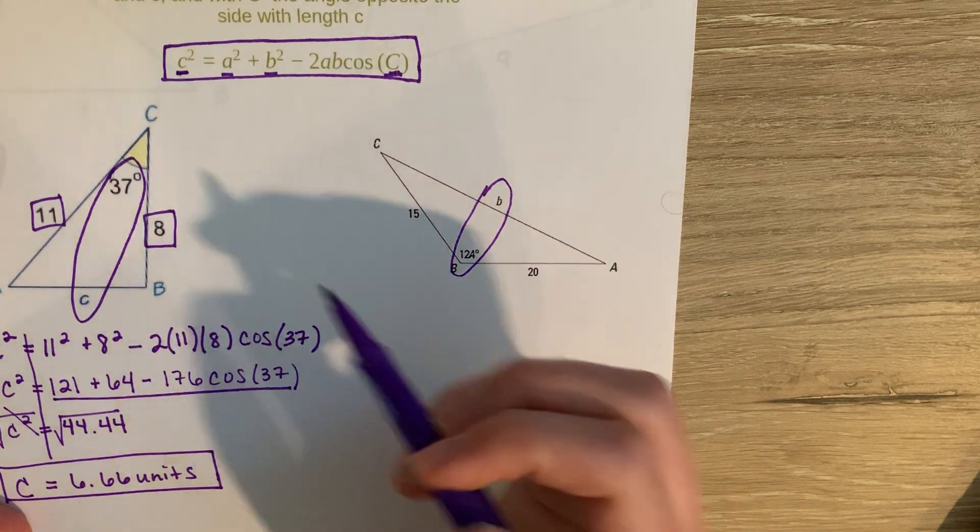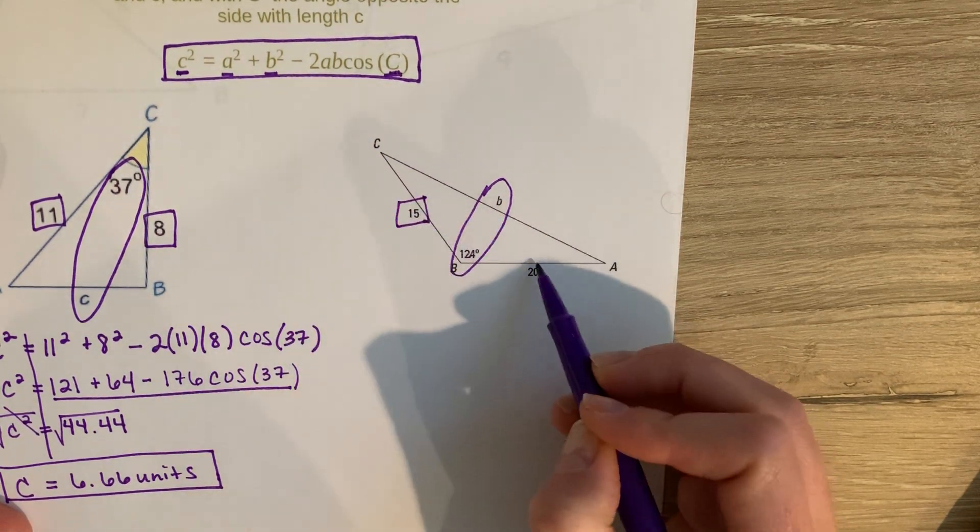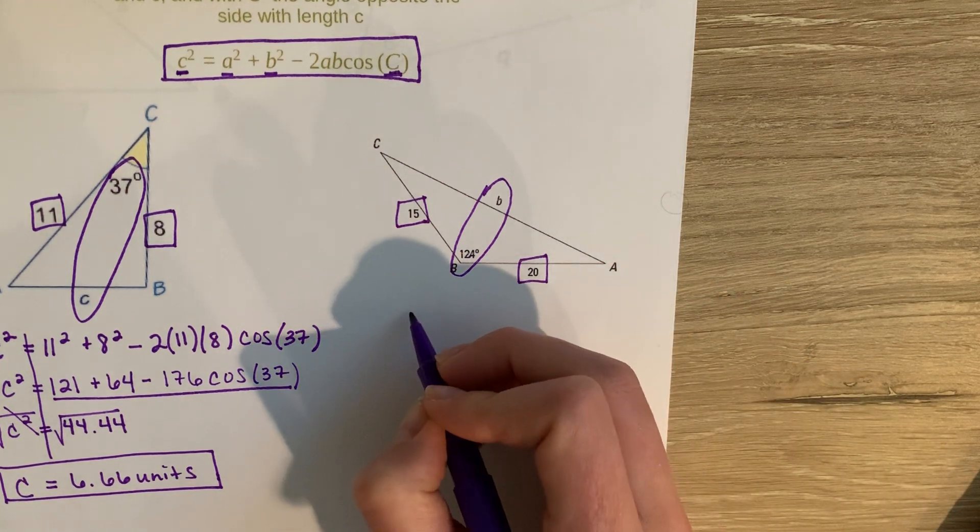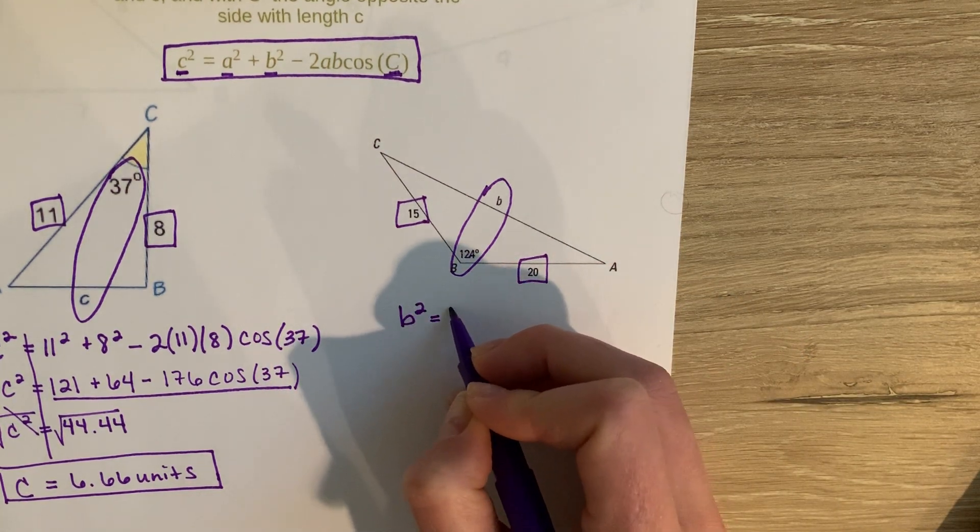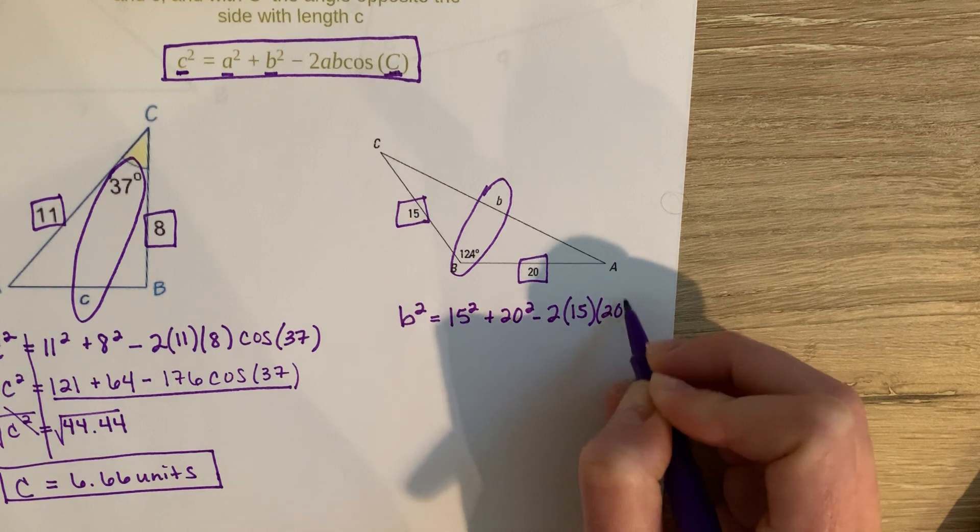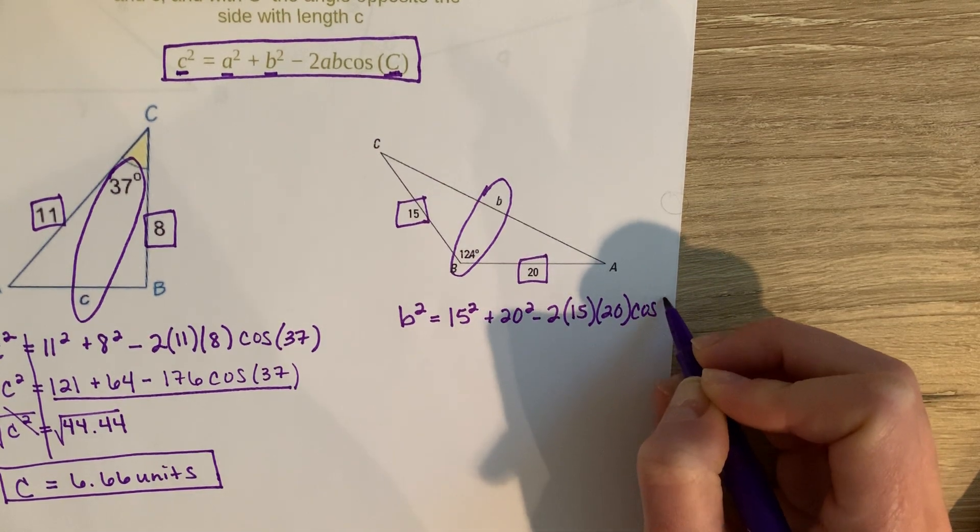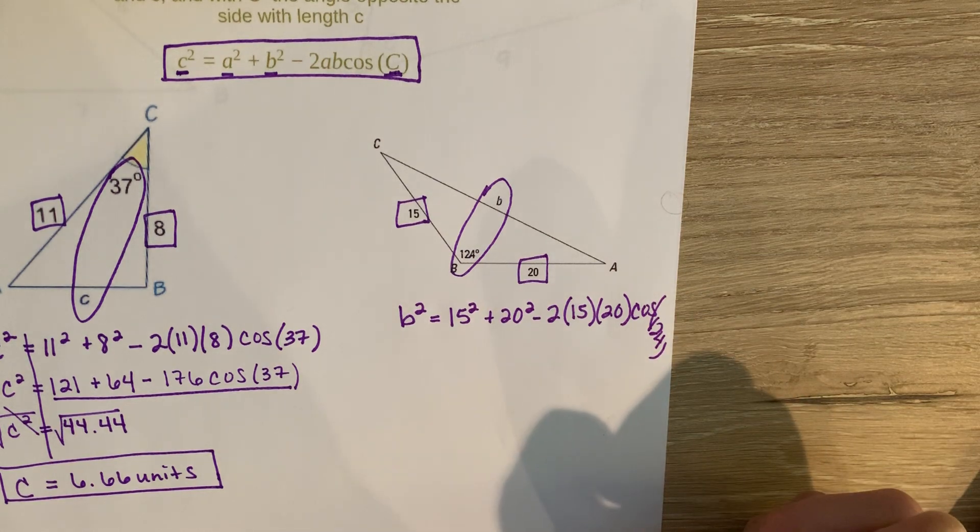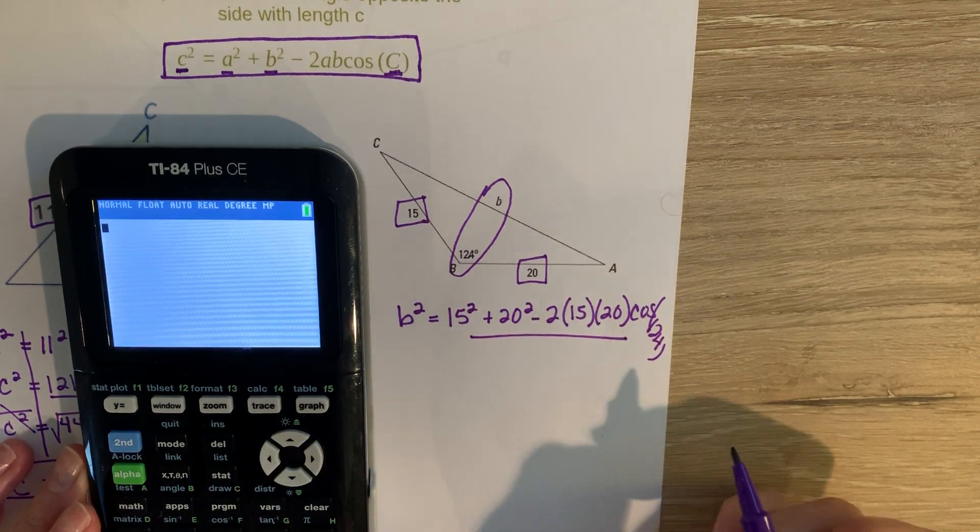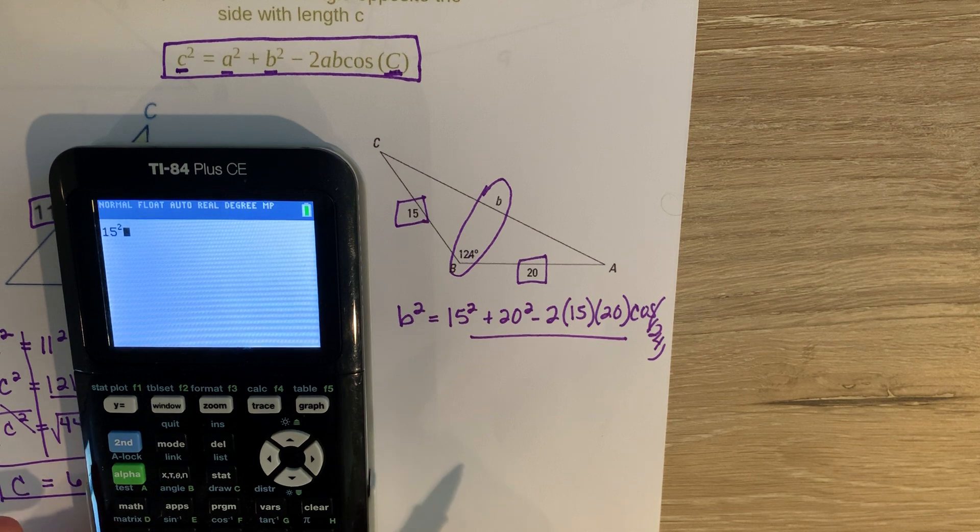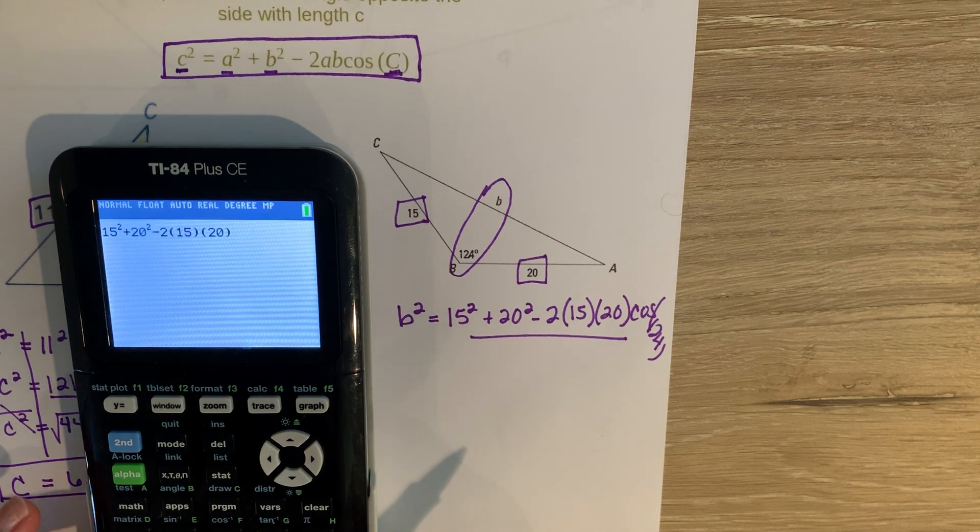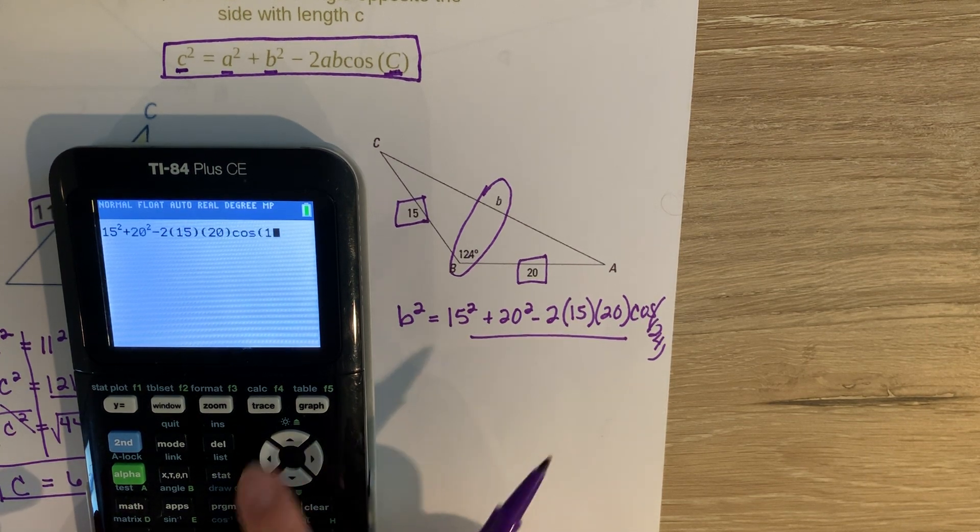And then 15 and 20 are going to go in for my a and my b into my formula. So I have b squared equals 15 squared plus 20 squared minus 2 times 15 times 20 cosine of 124. And I would again just type this whole right side into your calculator. So we get 15 squared plus 20 squared, minus 2 times 15 times 20 cosine of 124.